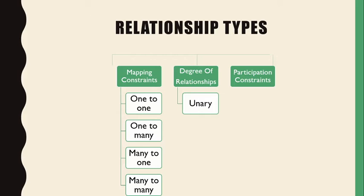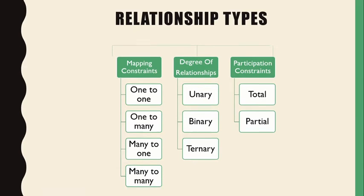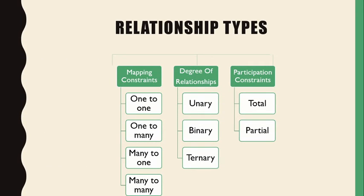The degree of relationships includes unary, binary, and ternary. Participation constraints are total and partial. In mapping constraints, how many entities are related to the other side determines the mapping. The degree of relationships refers to how many entities are related to each other. Participation constraints classify how many entities conform to find the relations — total participation and partial participation.